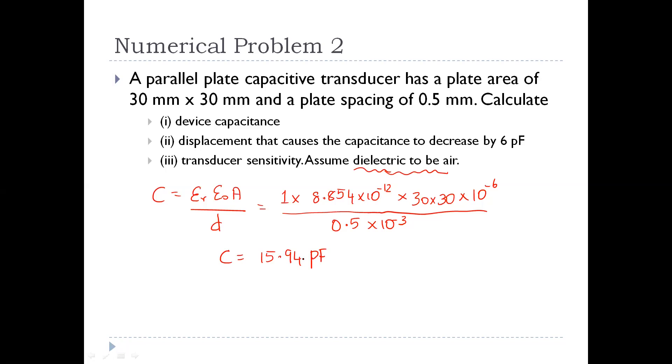Now this is part two of the problem. We have to find the displacement that causes the capacitance to decrease by 6 picofarads. We found it is 15.94, now the capacitance has decreased by 6 picofarads. So the new capacitance will be 15.94 minus 6, that is 9.94 picofarads. Again, I am going to substitute it in the same formula.